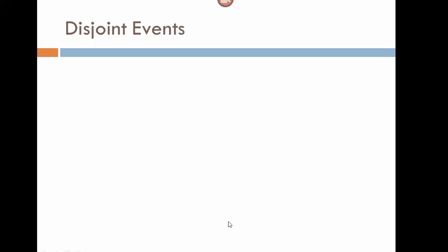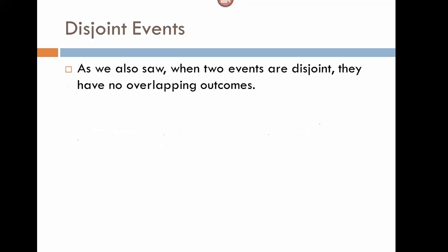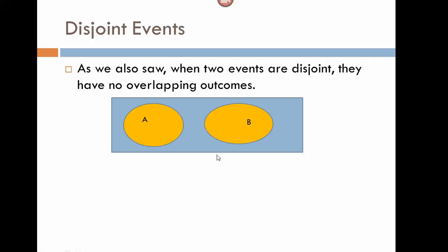We defined disjoint events as well. Two events are disjoint if they do not have any overlapping outcomes. In the example we looked at, we considered the probability of picking either a queen or a nine. It's impossible, with just one card from a deck, to pick a queen of nines — there is no such card. So we can never satisfy both events with a single trial. We say they're disjoint.